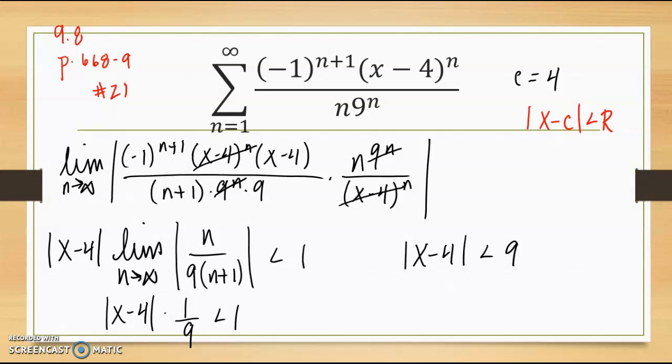So I always have to isolate the absolute value of x minus my center. So right here, my radius is equal to 9.